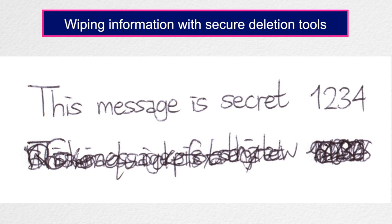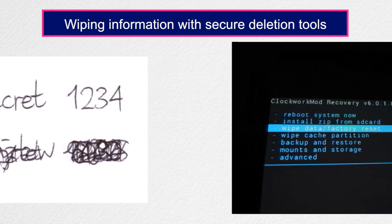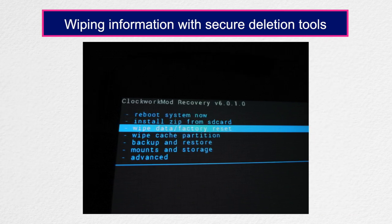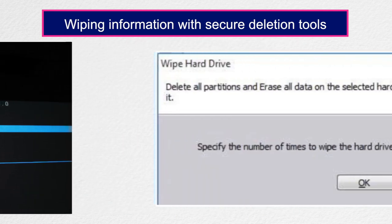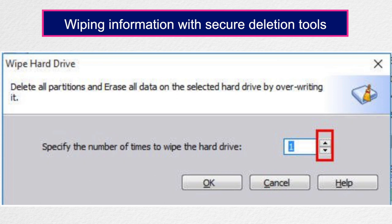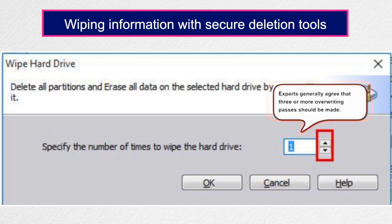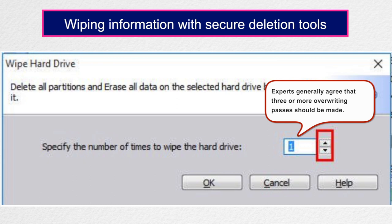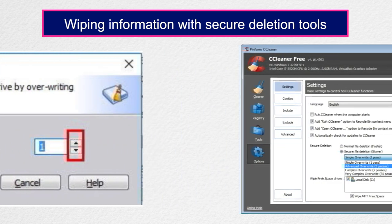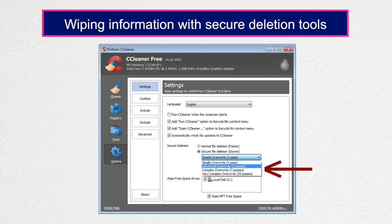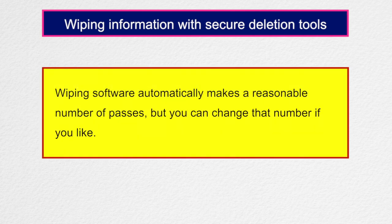And much like pencil lead, digital information can still be read — albeit poorly — even after it has been erased and something has been written over the top of it. Because of this, the tools recommended here overwrite files with random data several times. This process is called wiping, and the more times information is overwritten, the more difficult it becomes for someone to recover the original content. Experts generally agree that three or more writing passes should be made; some standards recommend seven or more. Wiping software automatically makes a reasonable number of passes, but you can change that number if you like.